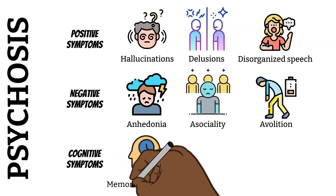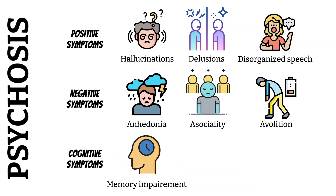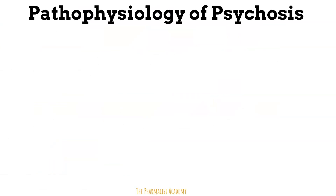Cognitive symptoms reflect how well the person's brain learns, stores, and uses information. Someone with schizophrenia or psychosis might have a hard time with their working memory — for example, they may not be able to keep track of different kinds of facts at the same time, such as a phone number plus instructions. The complexity of these signs and symptoms also translates to the complex pathophysiology.